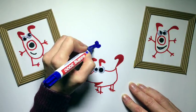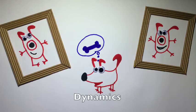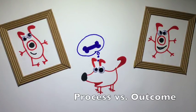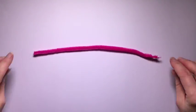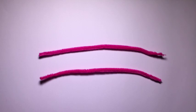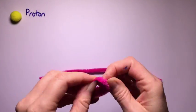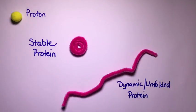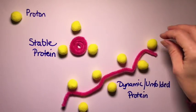Our approach builds upon the static images by adding an additional dimension of protein dynamics, thereby giving insight into the process of an event rather than looking only at the outcome of an event. We can monitor dynamics by measuring how quickly proteins exchange protons with their environment. Stable, well-folded proteins take up fewer protons. Dynamic or unfolded proteins take up more protons.